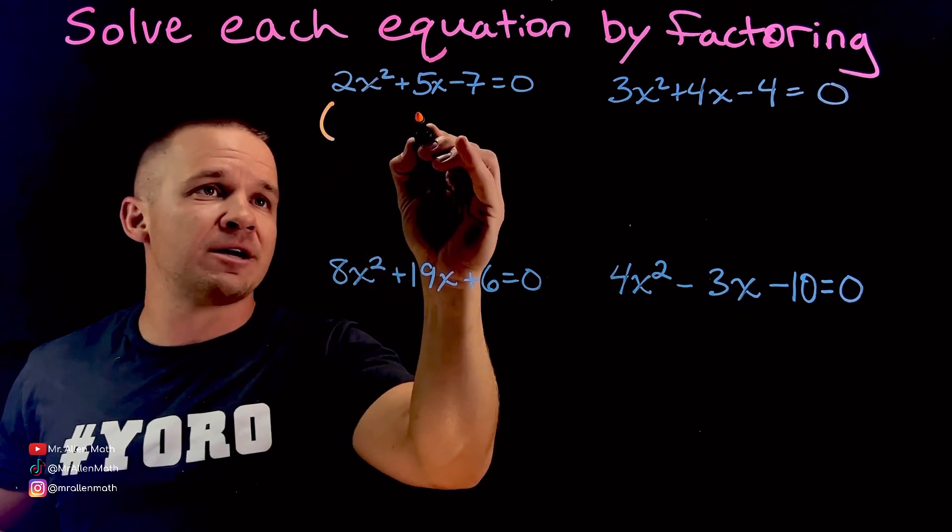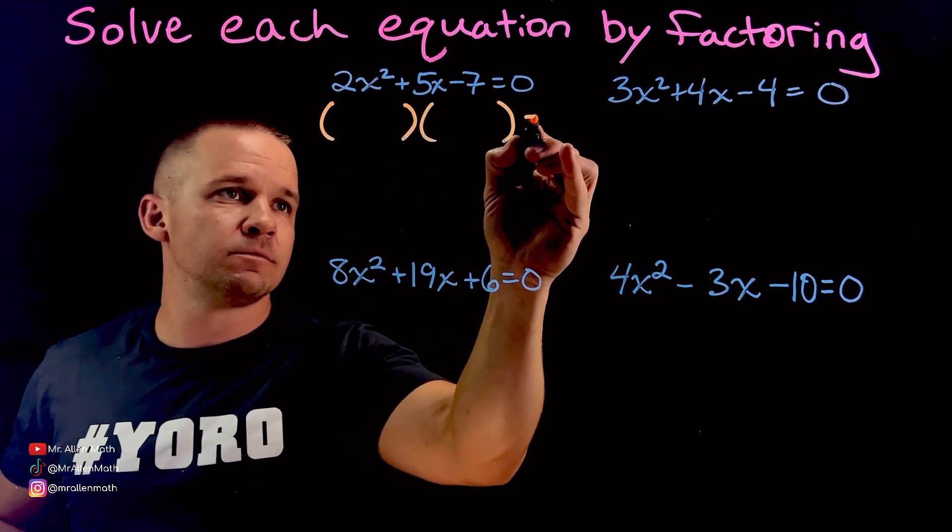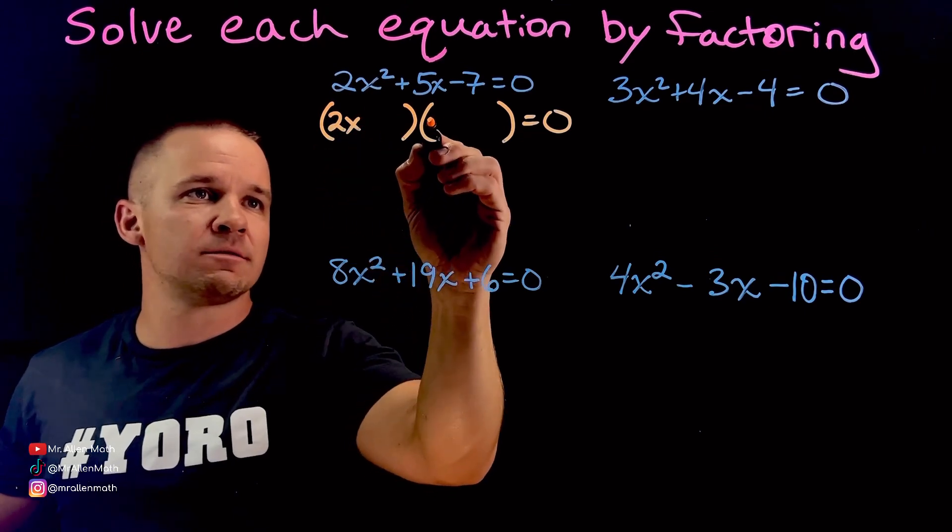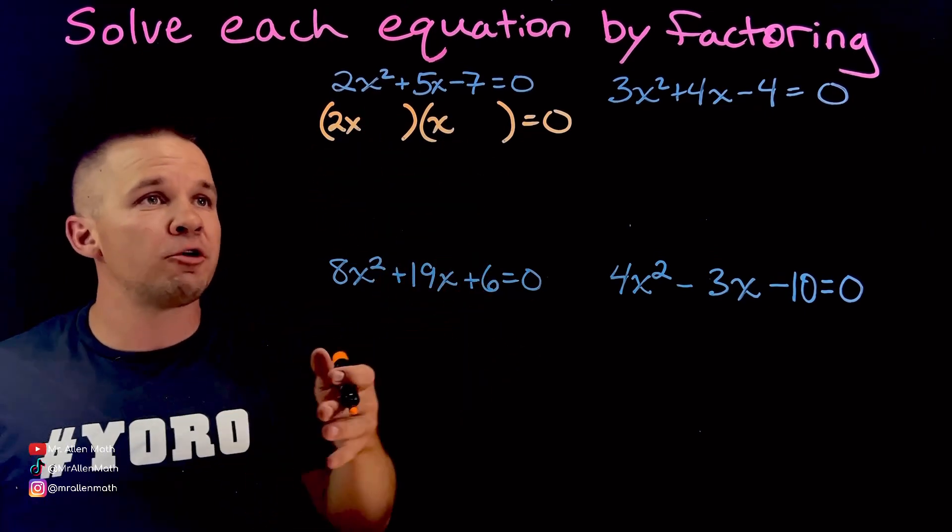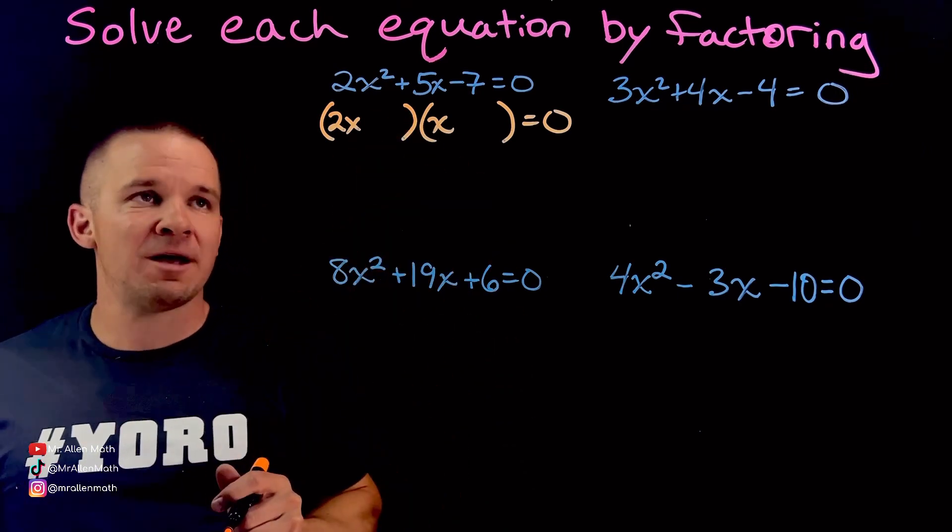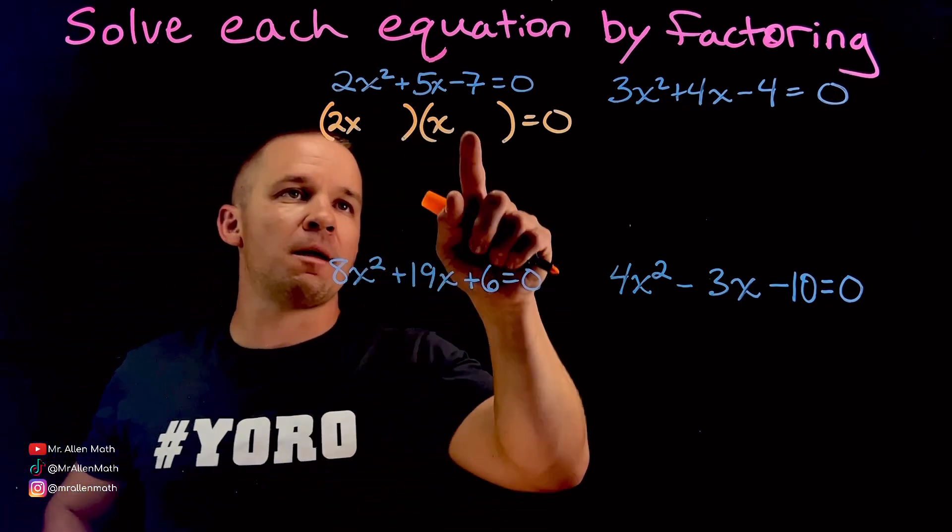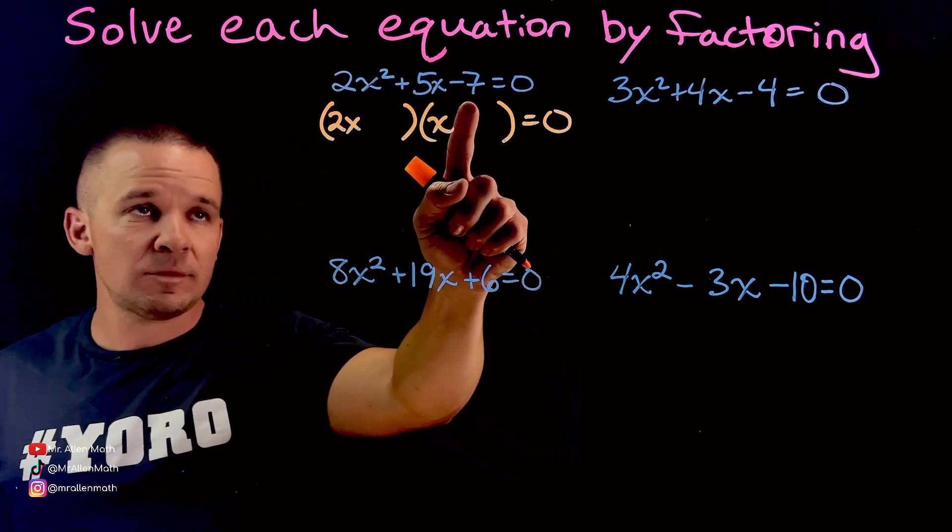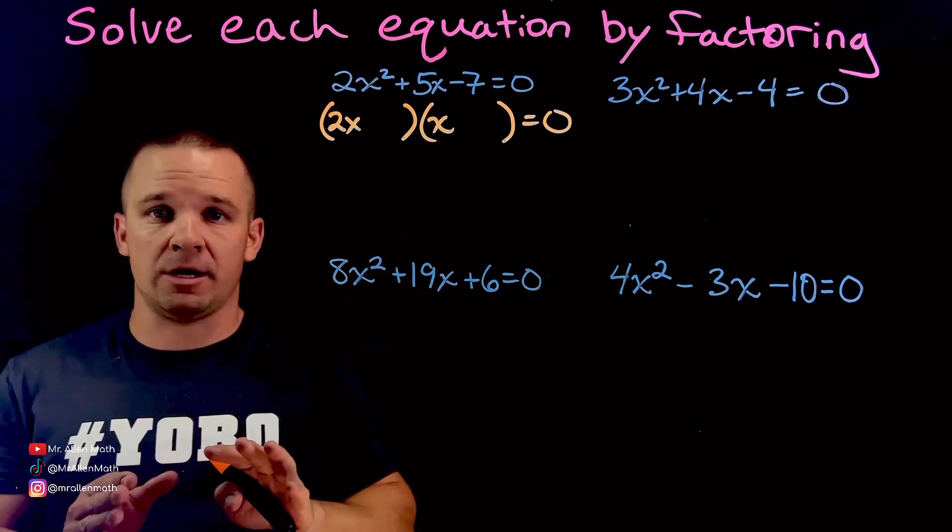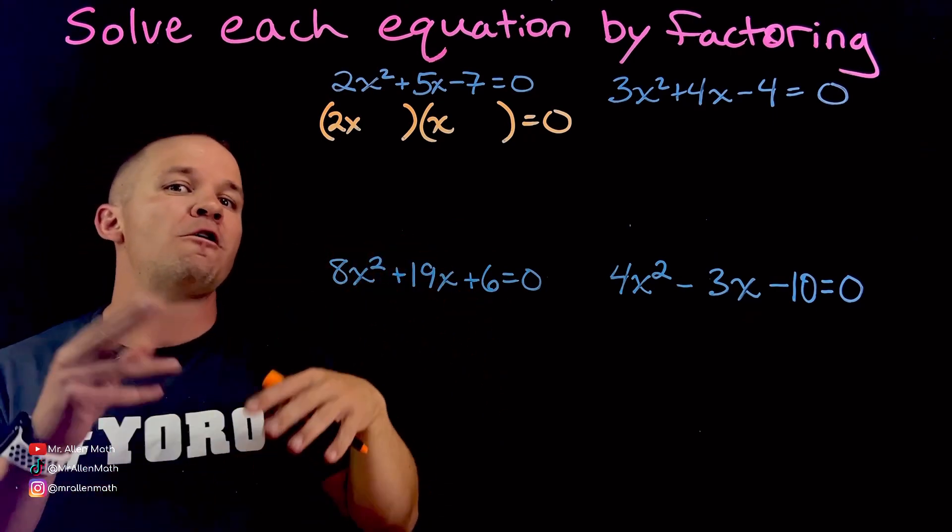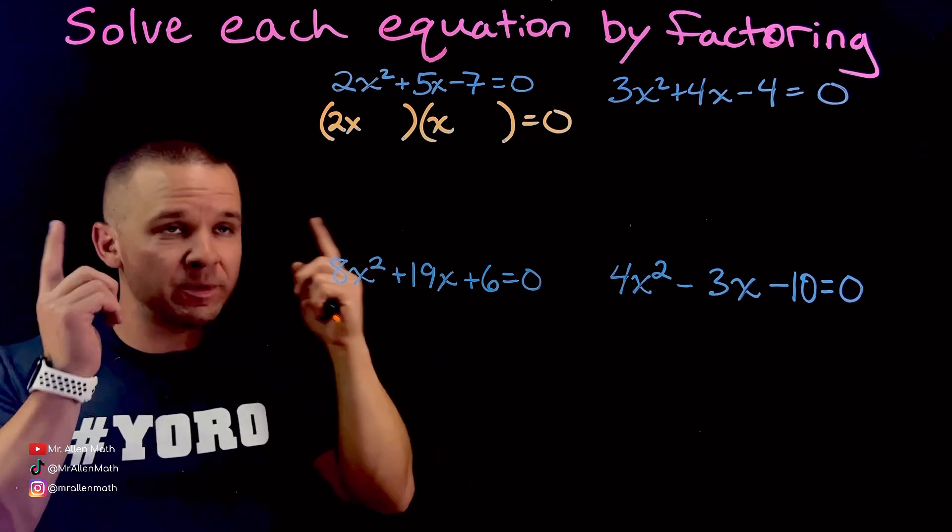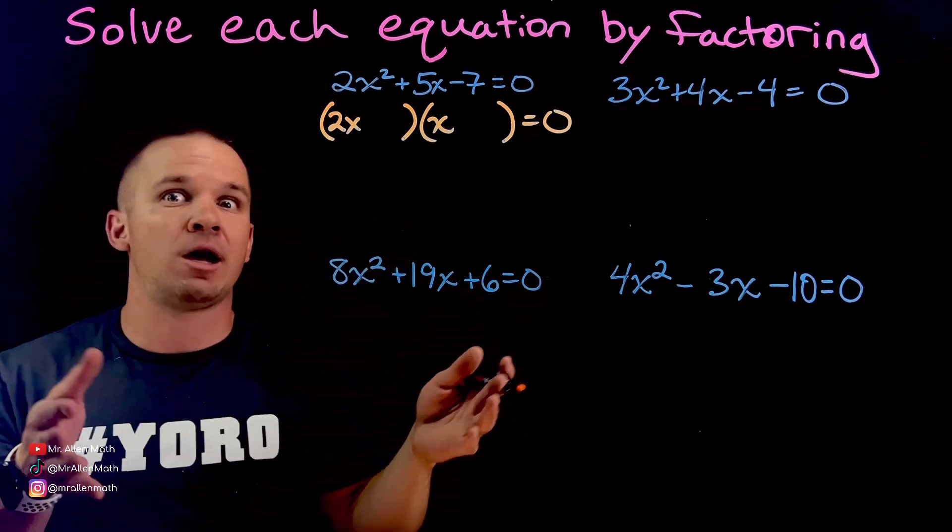Here's why I like to do guess and check for this one. You can do rainbow method if you want, but I'm going to do guess and check. I know it's going to be two factors here, if it's factorable, equals zero. To get 2x squared, I know I have to have 2x and x. There's no other way to get 2x squared, right?